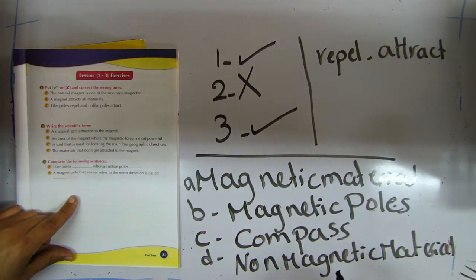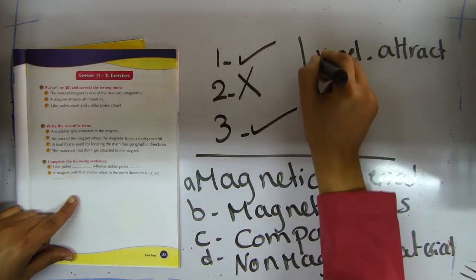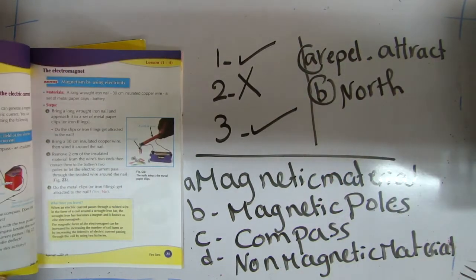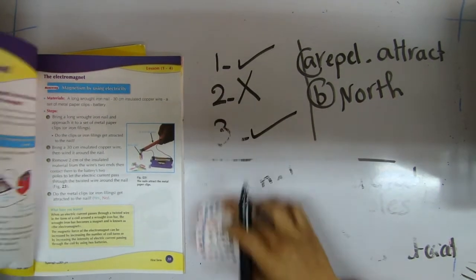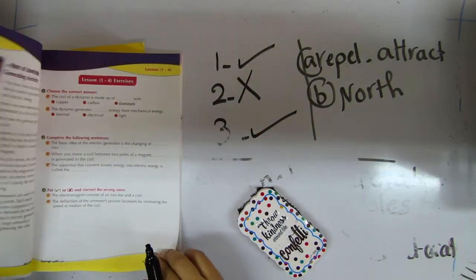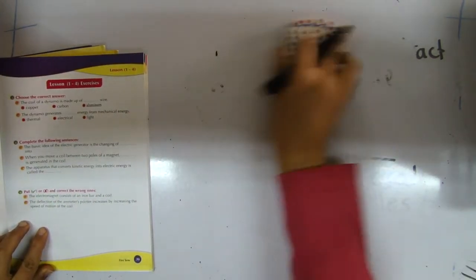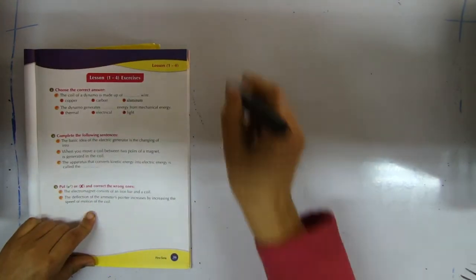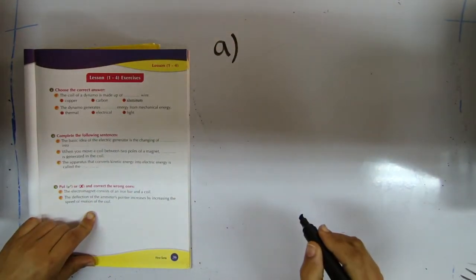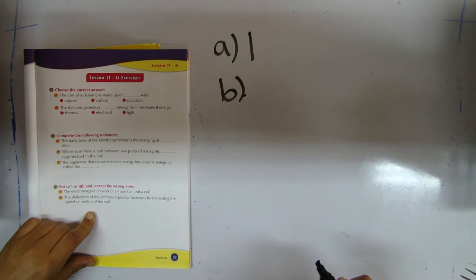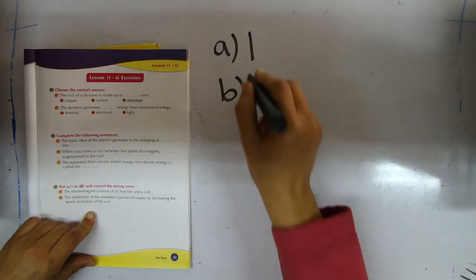The magnetic pole that always refers to the north direction is called north. Now we finish lesson three. We're going to start lesson four: magnetism and electricity. Question number one, choose the correct answer. Number one: the coil of a dynamo is made up of copper. Number two: the dynamo generates mechanical energy and produces electric energy.